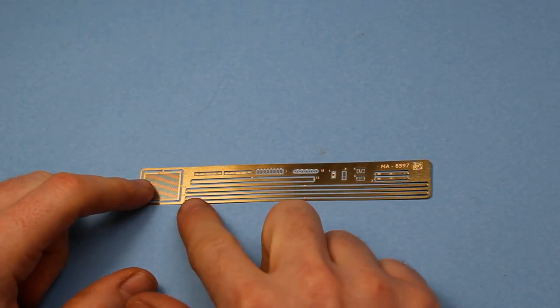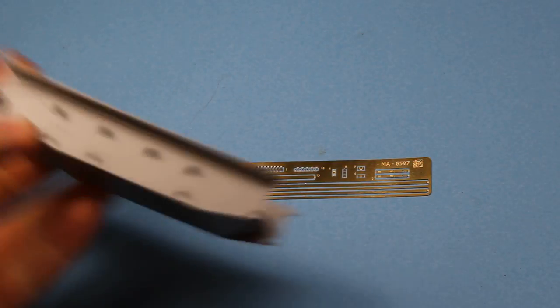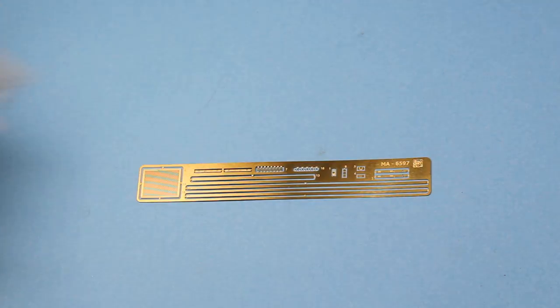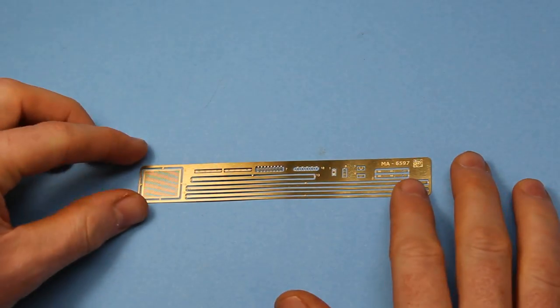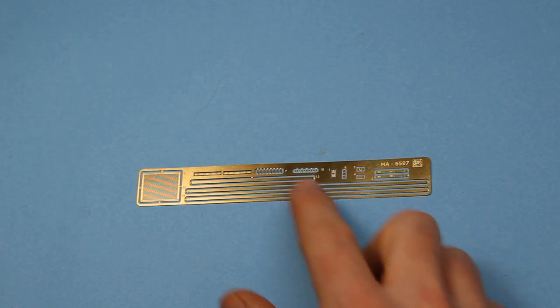This is the piece of photo etch which has the side parts there, the very thin parts there that go on the edge of the fenders that I mentioned which is a bit of a strange way to go about it. A bit of mesh there for the rear deck and a few small fixings, so that's a nice addition.